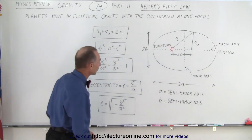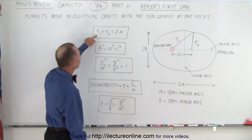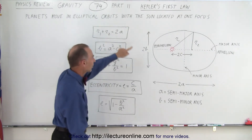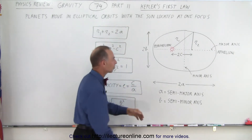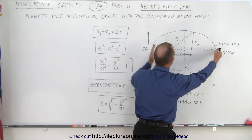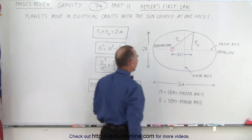Here we have some relationships. We have the sum of those two equal twice the semi-major axis. The semi-major axis is half the distance, so that's the major axis, and so these two add up to the major axis.